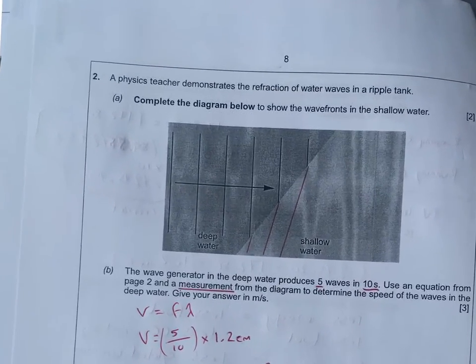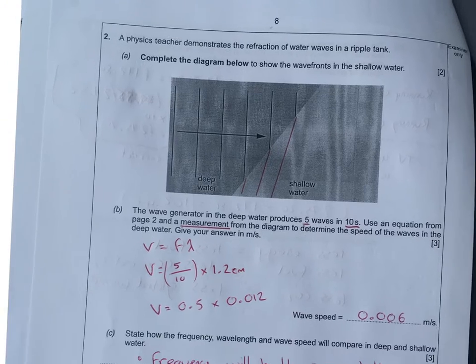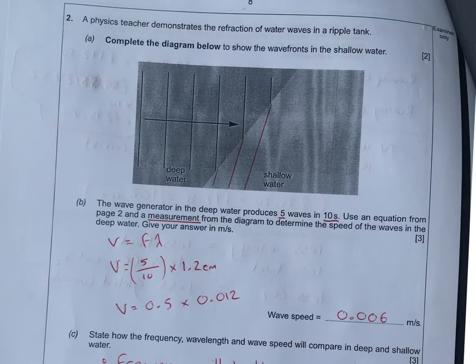Nearly seven minutes just on question one. Now we can rip through these questions. We've got a wave question. It's all about recognizing that these wave fronts, there's your boundary, are going to bend in because it's shallow water, therefore automatically reducing that wavelength. We've got the equation. It's got five waves in 10 seconds, so that's pretty much your frequency.